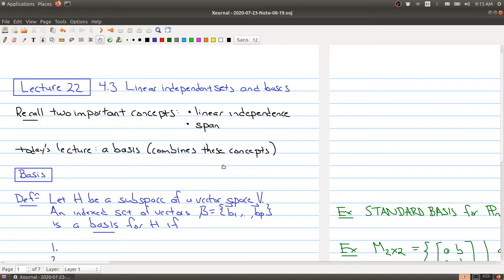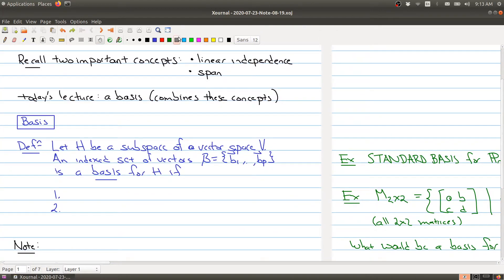Let's start with the definition of a basis. Take H to be a subspace of a vector space V. An indexed set of vectors, meaning you're putting the vectors in some particular order, is a basis for H if the following two conditions are satisfied. First, the set of vectors in B is linearly independent.